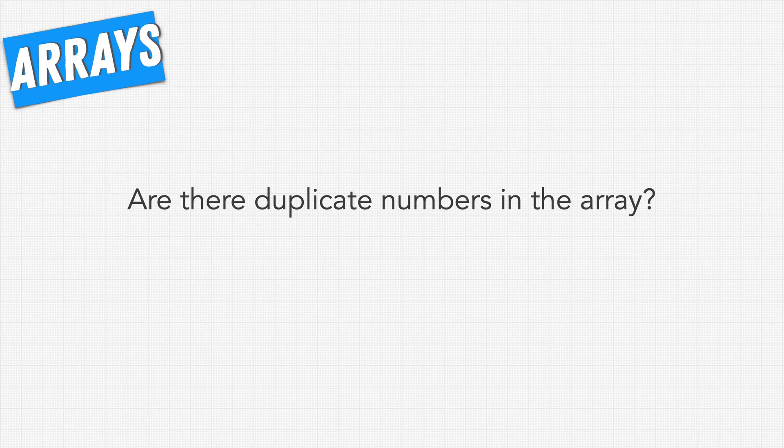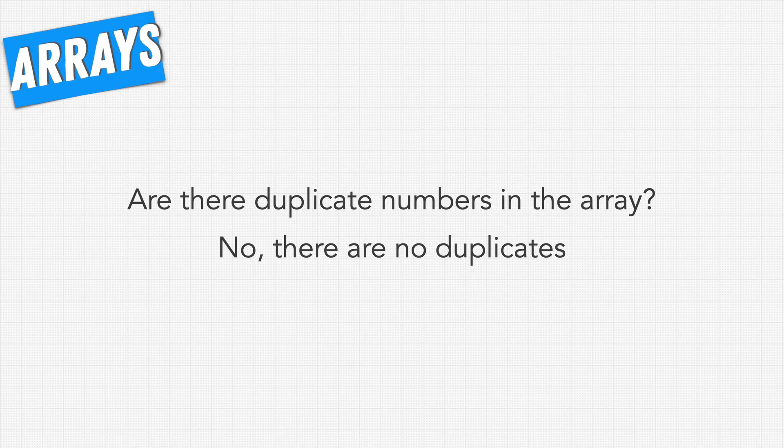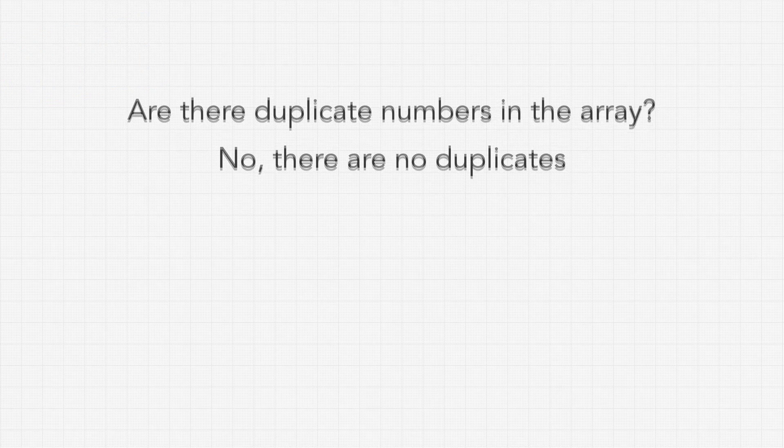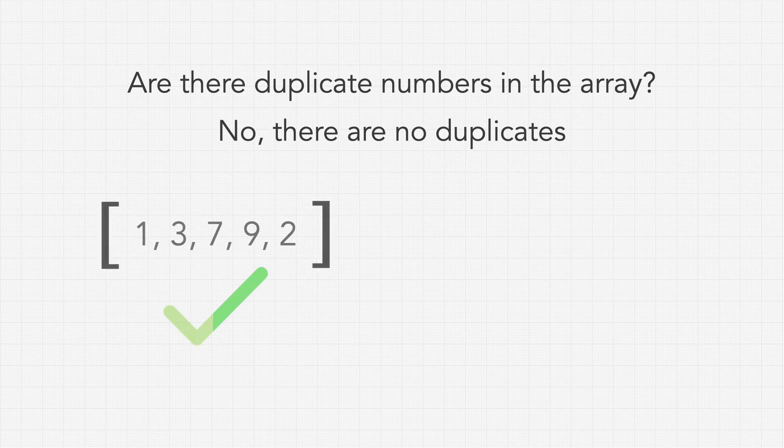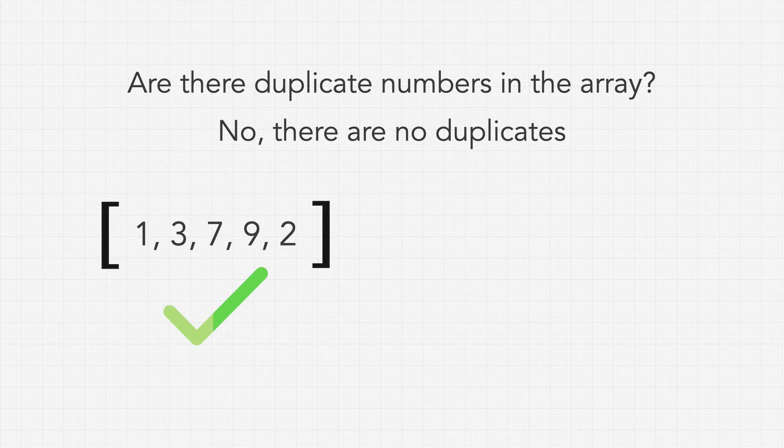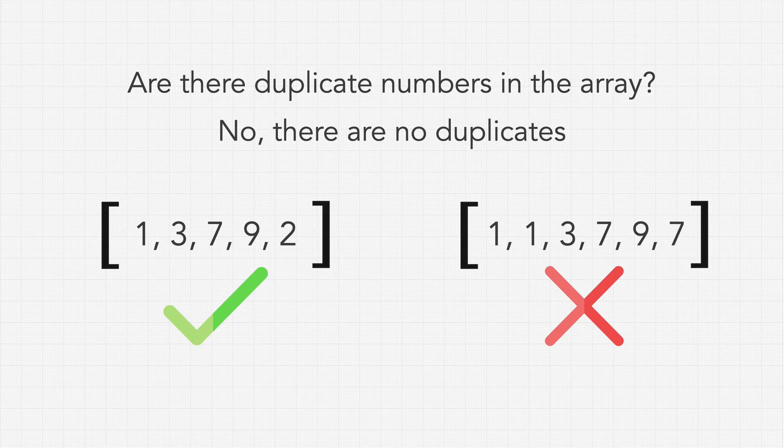The next question we might ask is are there duplicate numbers in the array? Now in this case they might actually say no there are no duplicates. If they said yes there are duplicates that's just a factor we have to keep in mind when we come up with our solution in a later step, but we'll explore that after. This means that we can receive an array where all of our values are unique and we should not expect to receive an array where any number is duplicated. So far we know that we're gonna get positive integers and unique numbers in our arrays.